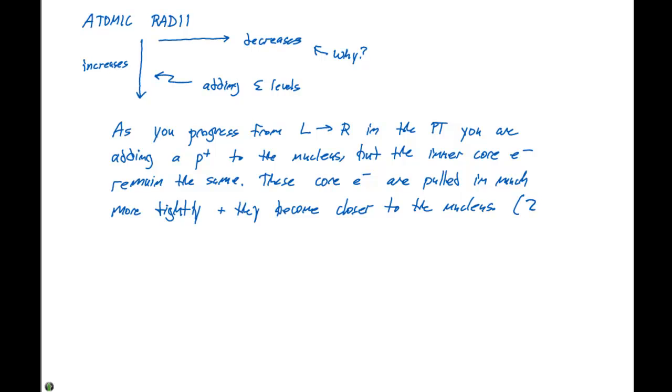And we refer to this phenomenon as effective nuclear charge, or Z-effective. So if we progress from, say, scandium to zinc in the periodic table, each of these guys has the argon noble gas core, which is 1s2, 2s2, 2p6, 3s2, 3p6.